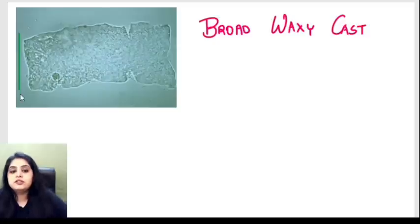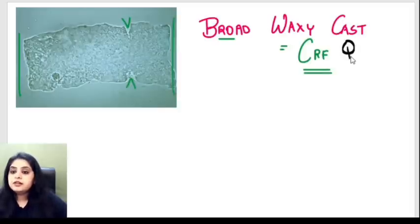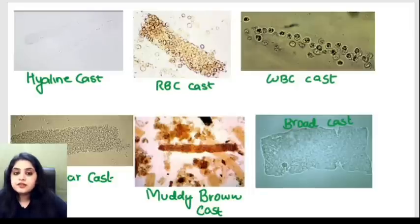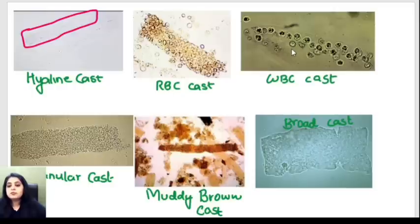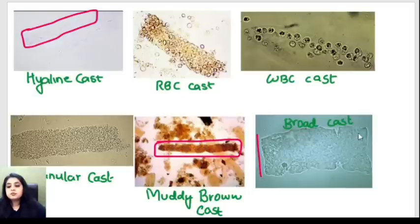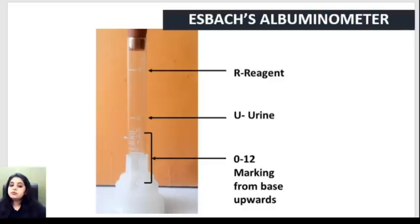The last cast is the broad waxy cast. Compared to the others, it is broader and kind of broken. This is the cast of chronic renal failure — a very important exam question. To summarize all casts: transparent is hyaline (normal); RBCs on top is RBC cast; WBCs on top is WBC cast; degenerated is granular cast; dirty and muddy is muddy brown cast; broad and broken is broad waxy cast.